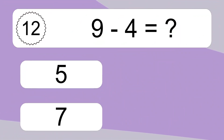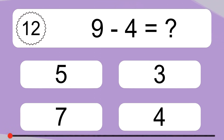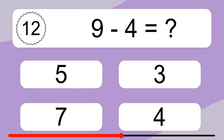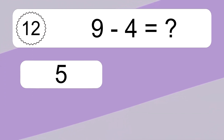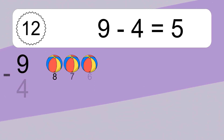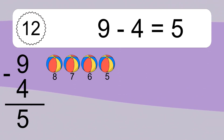9 minus 4 equals what? 9 minus 4 equals 5. Let's count it: 8, 7, 6, 5.